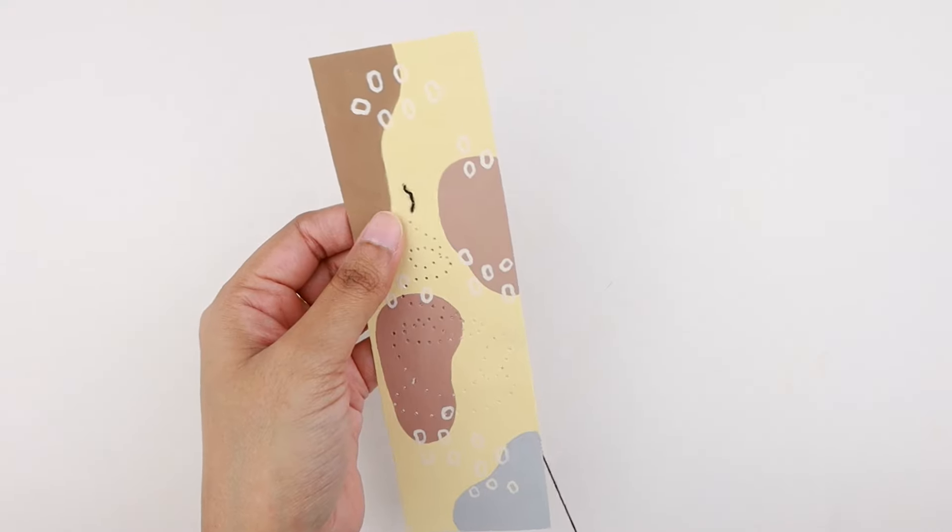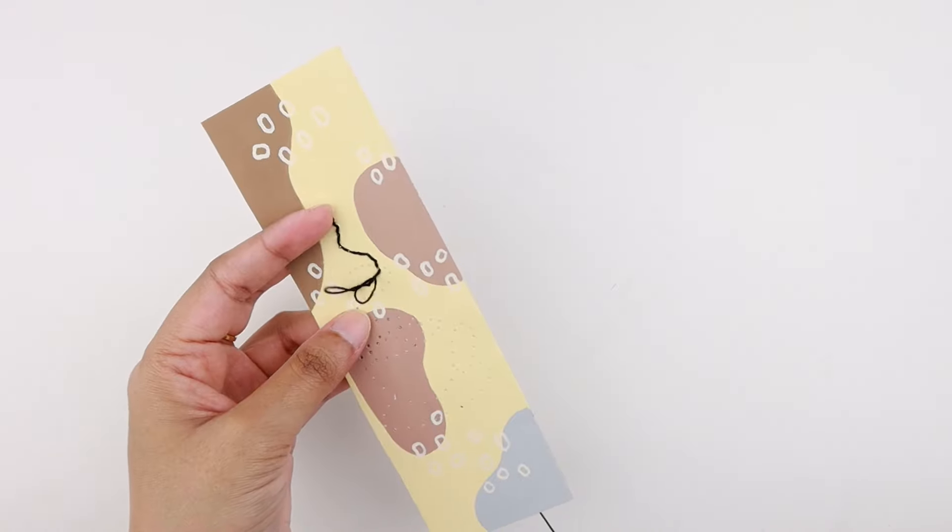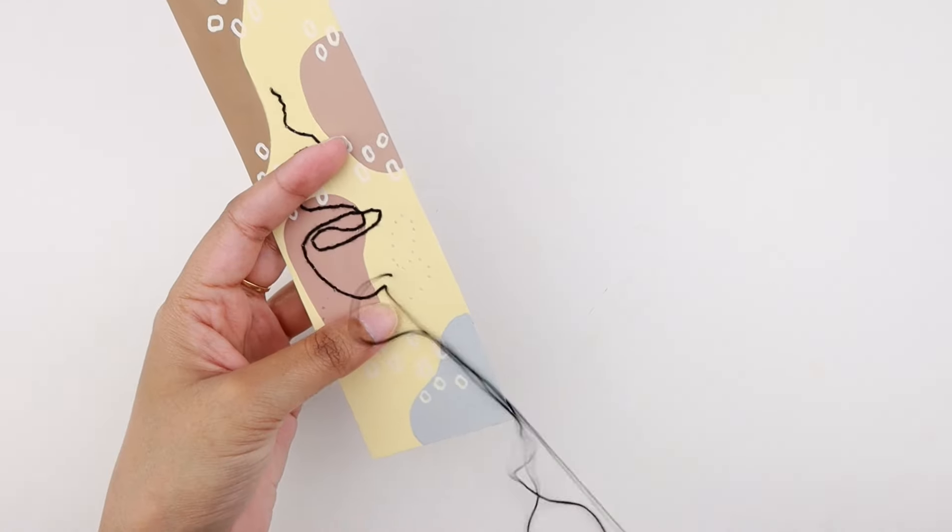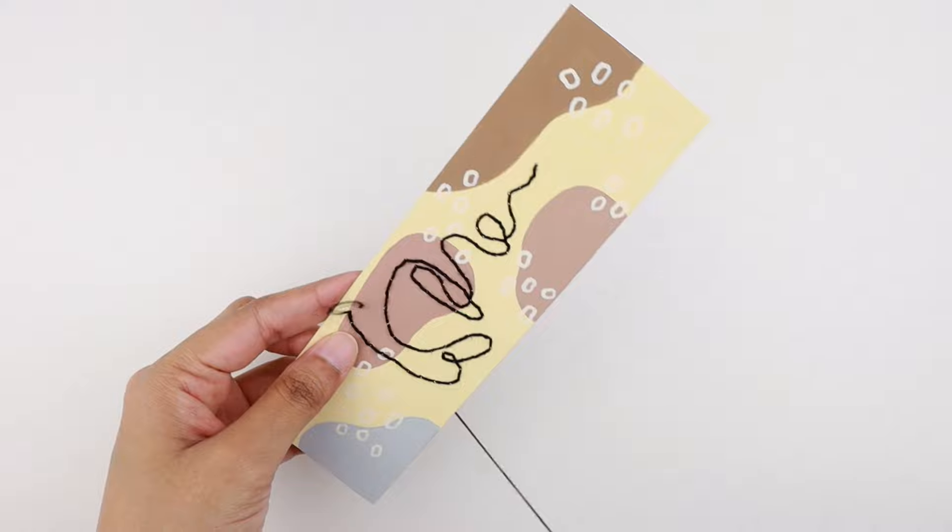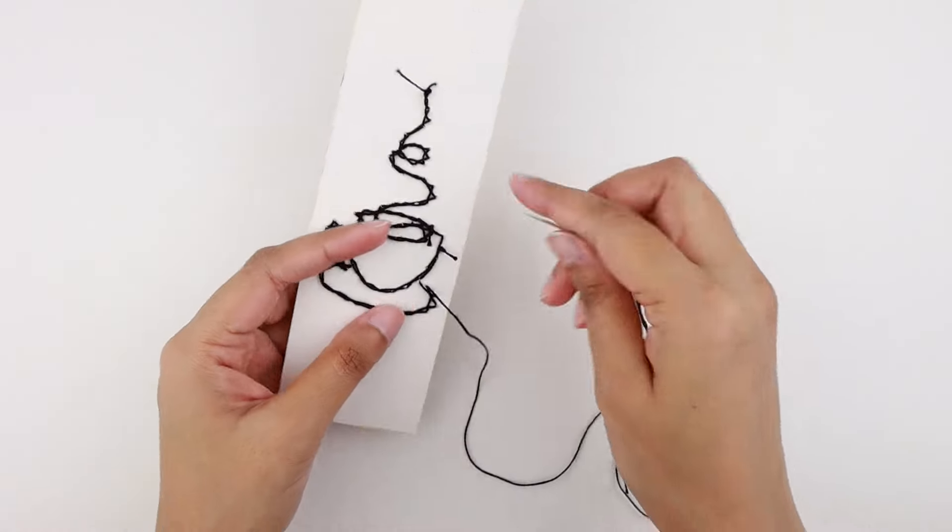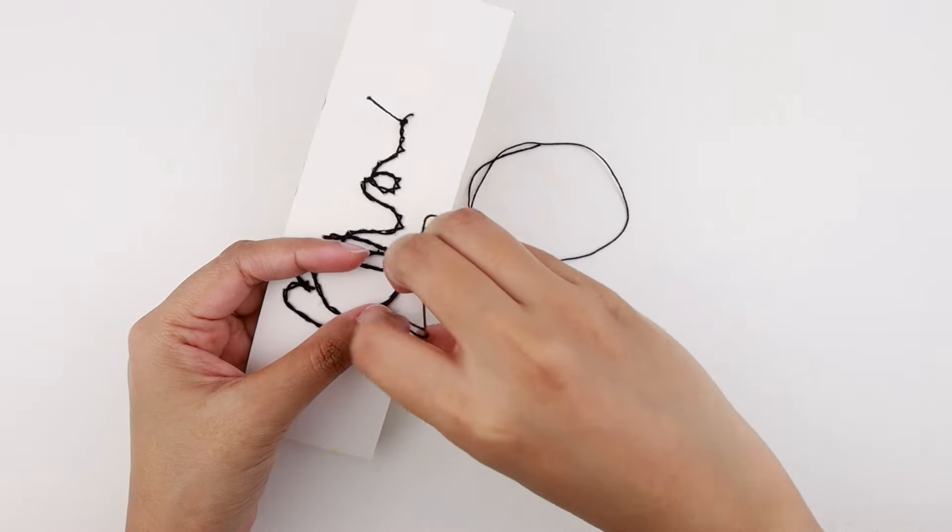In the same way, we are going to continue doing the stitches following the needle perforations. You can also skip the embroidery work if you want. Instead, you can just draw the line art with the black sharpie or acrylic paint. Once the embroidery is done, I'm going to turn it over and tie a couple of knots at the back to secure everything.